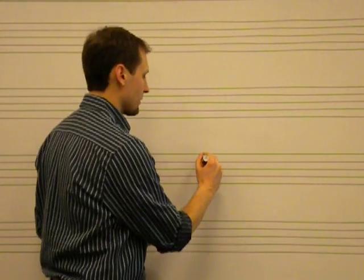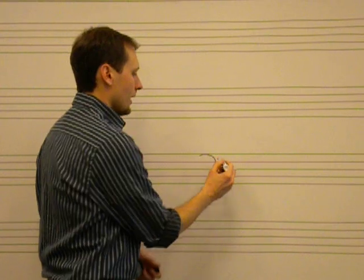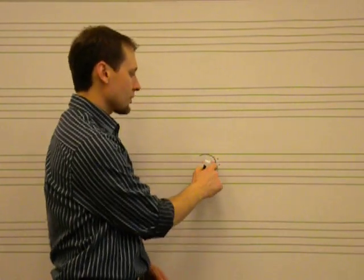A bass clef looks like this. And a bass clef is also known as the F clef, because these two dots go across, or surround the line F.